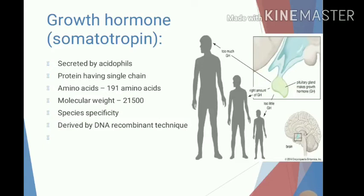Growth hormone is also known as somatotrophin. It is the most important hormone for postnatal growth and development to adult size. It is also helpful to maintain lean body mass and bone mass in adults. It is secreted by acidophilic cells of the anterior pituitary.